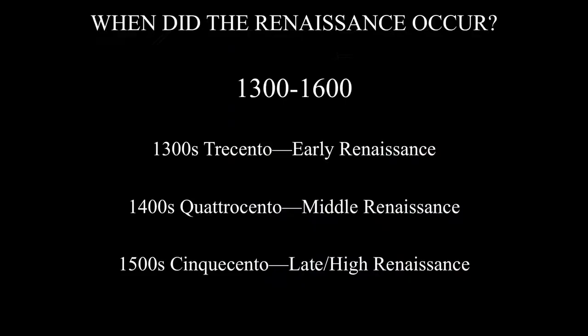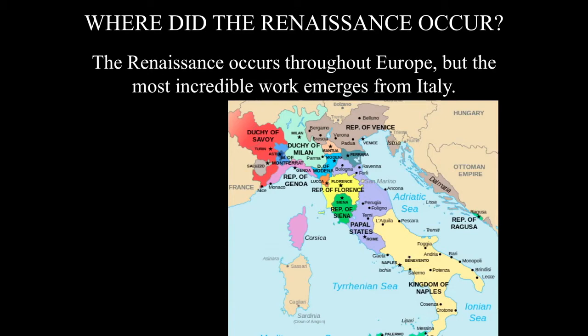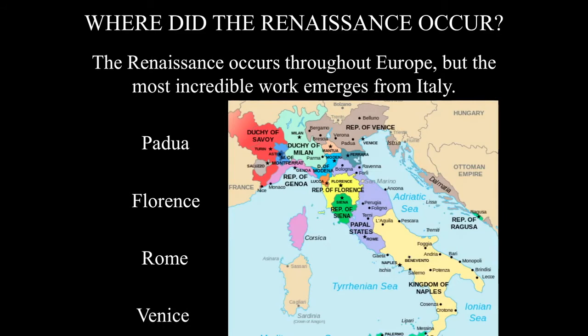The Renaissance itself occurred all over Europe, even up in England, but the most incredible works we focus on emerged from Italy — about 80% of Renaissance art occurred there. We're going to cover four major cities: today we focus on Padua, near Venice; next lecture we'll be in Florence; during the 1500s, Rome and the Vatican; and after the sack of Rome in 1527, we'll be back up in the city of Venice.